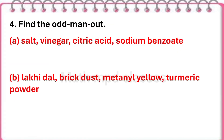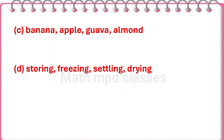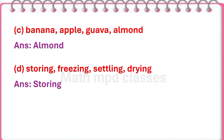Next question: Find the odd man out. A: Salt, vinegar, citric acid, sodium benzoate. The odd man is salt. Second: Metanil yellow, brick dust, metanil yellow, turmeric powder. Answer is turmeric powder. Third: Banana, apple, guava, almond. Answer is almond. Next: Storing, freezing, settling, drying. Answer is storing.